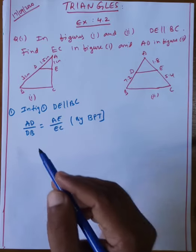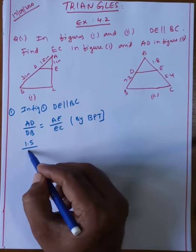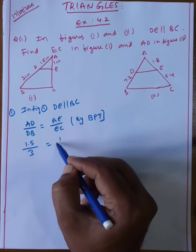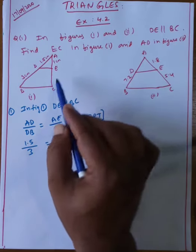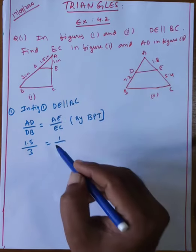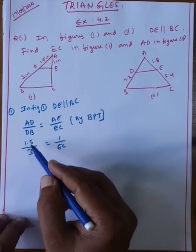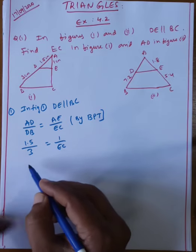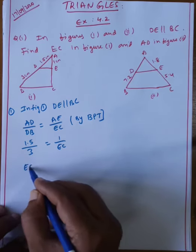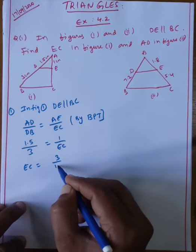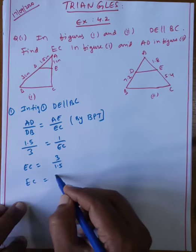What is given? AD equals 1.5 cm, DB equals 3, and AE equals 1. We need to find the value of EC in figure 1. AE by EC equals 1.5 by 3. Therefore EC equals 3 by 1.5, which equals 30 by 15, which equals 2.